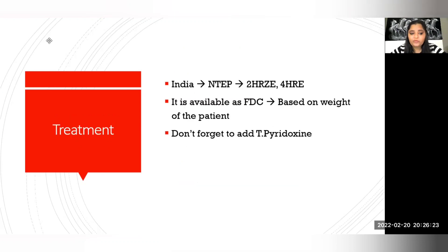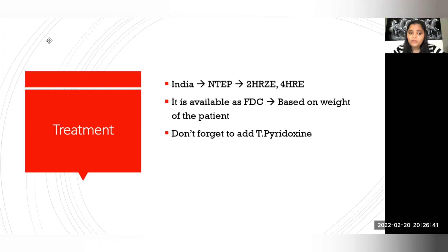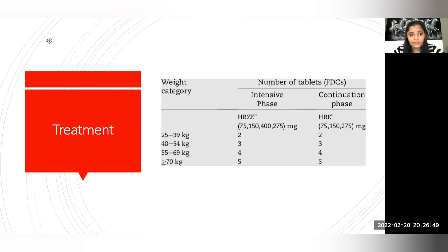Once a patient is tagged as rifampicin resistant, you'll be treating with MDR drugs, which are notorious for various side effects and longer treatment duration. In India, NTP recommends 2HRZE followed by 4 months of HRE, available as fixed-dose combination based on patient weight. Whenever giving isoniazid, don't forget to add pyridoxine — dosage between 10 to 50 mg based on weight.